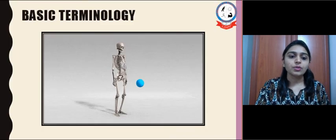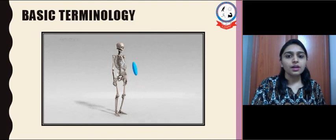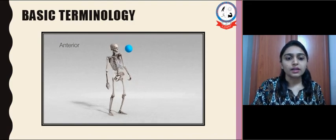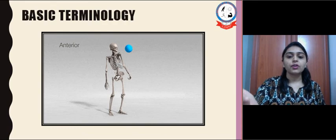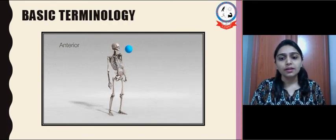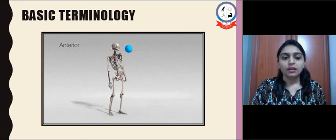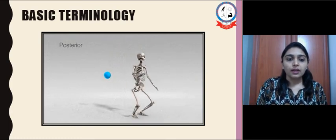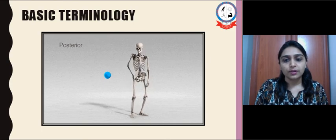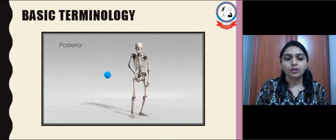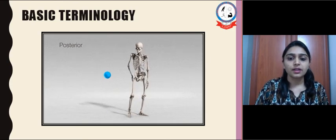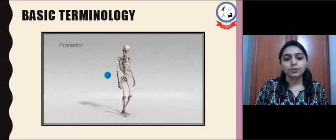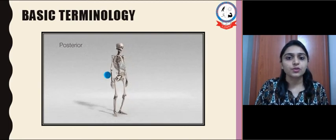The basic terminologies are: first is anterior — the thing which is in front of your body is known as anterior. The thing which goes to the back of your body is known as posterior. The thing which is in front is anterior and the thing which is back is posterior.